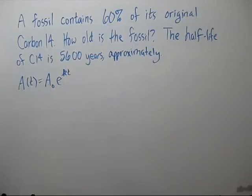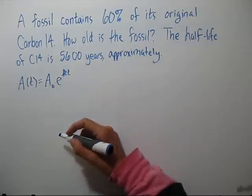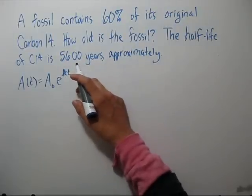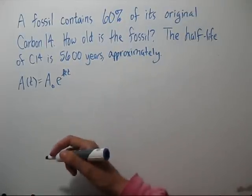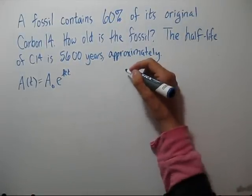First thing we want to do is find out what k is. To do that we'll use that the half-life is 5,600 years. So we don't have an initial amount. Let's just pick a convenient one.